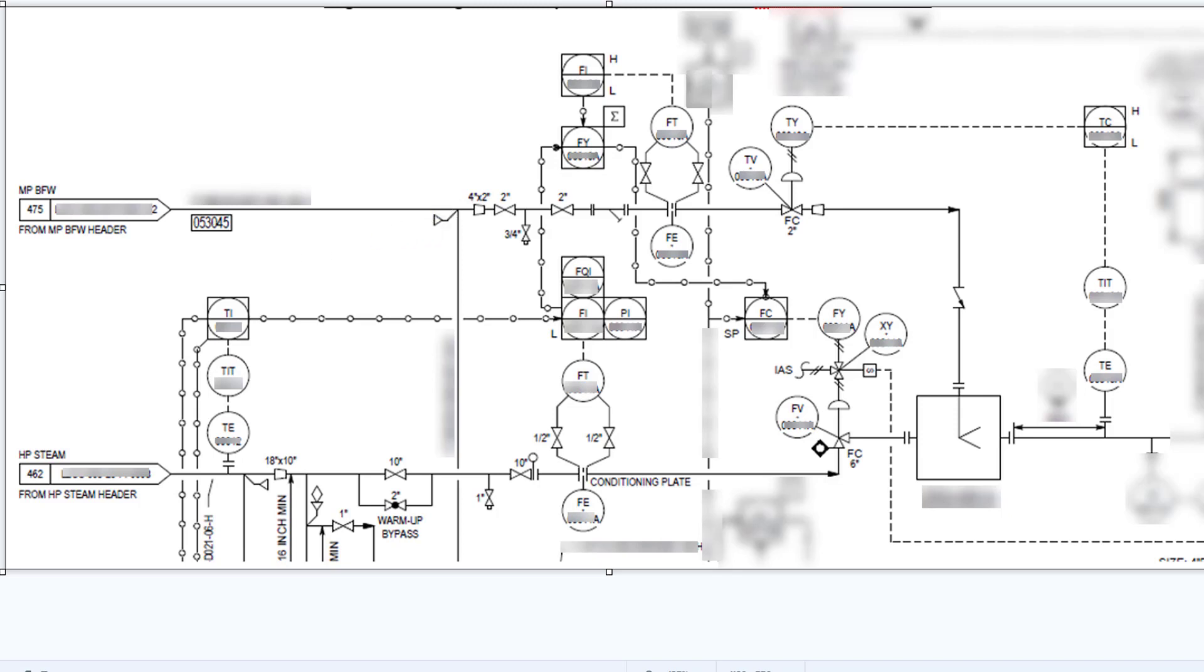Here's an example: you have your HP steam coming in which is going through a standard flow meter. This one in this particular example has a conditioning orifice, and then you have your medium pressure boiler feed water. You'll find there is a flow meter on the boiler feed water line and a flow meter on the steam line.